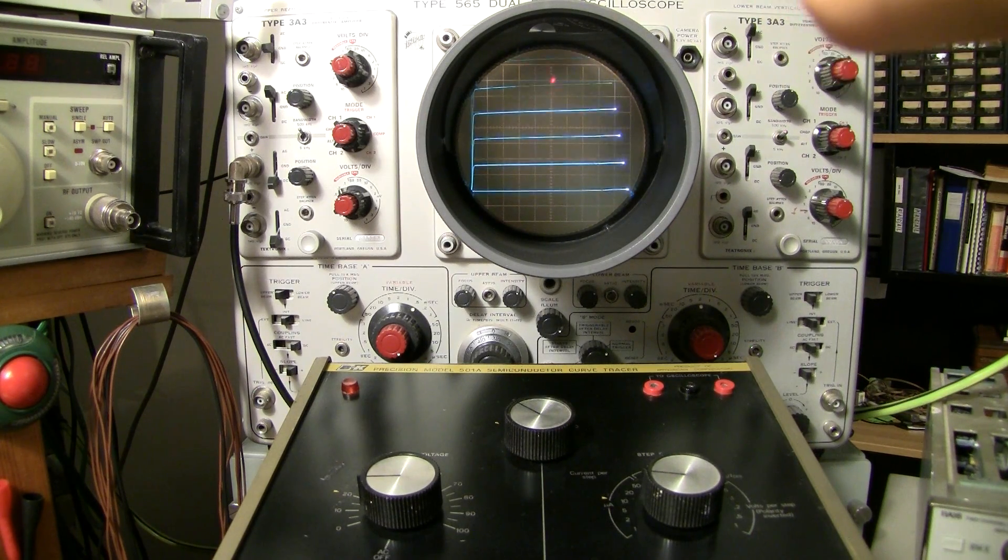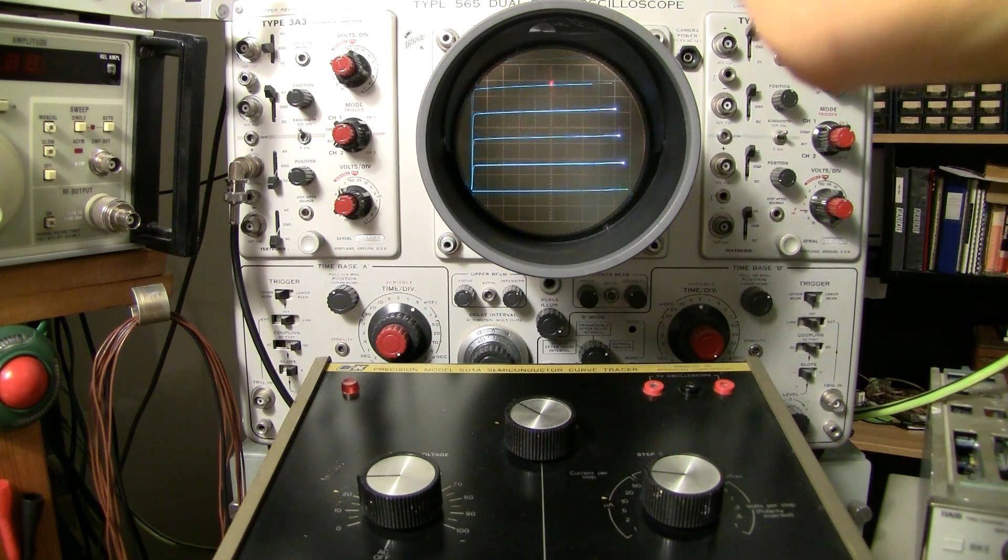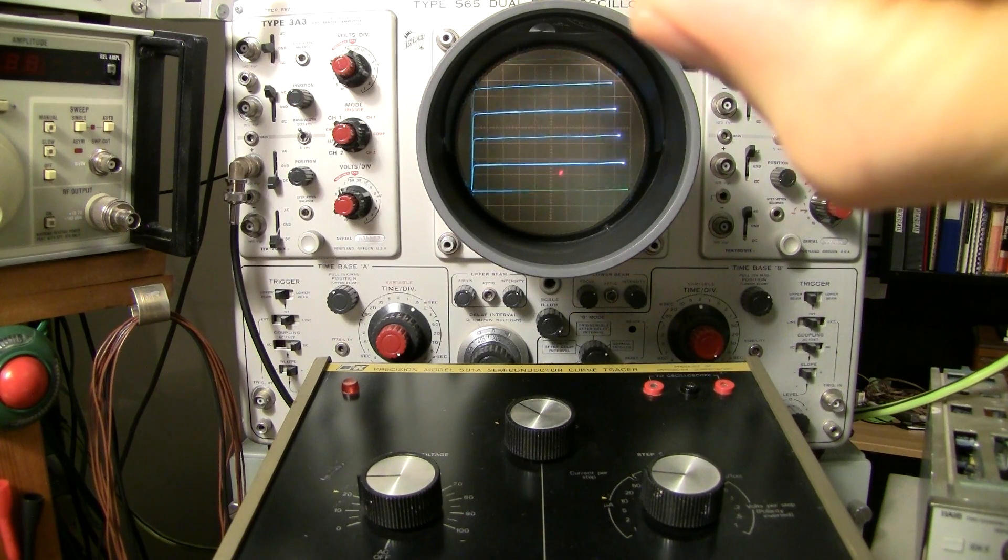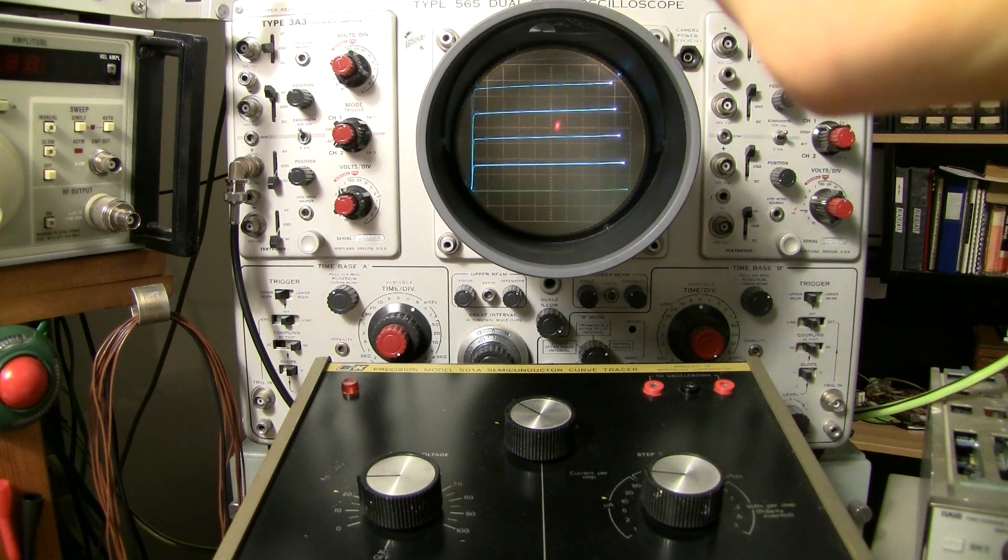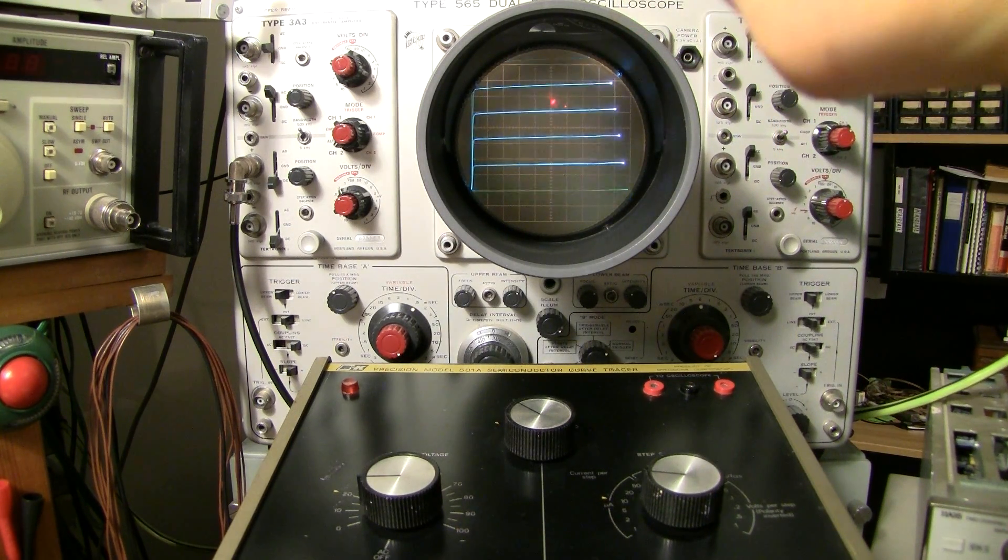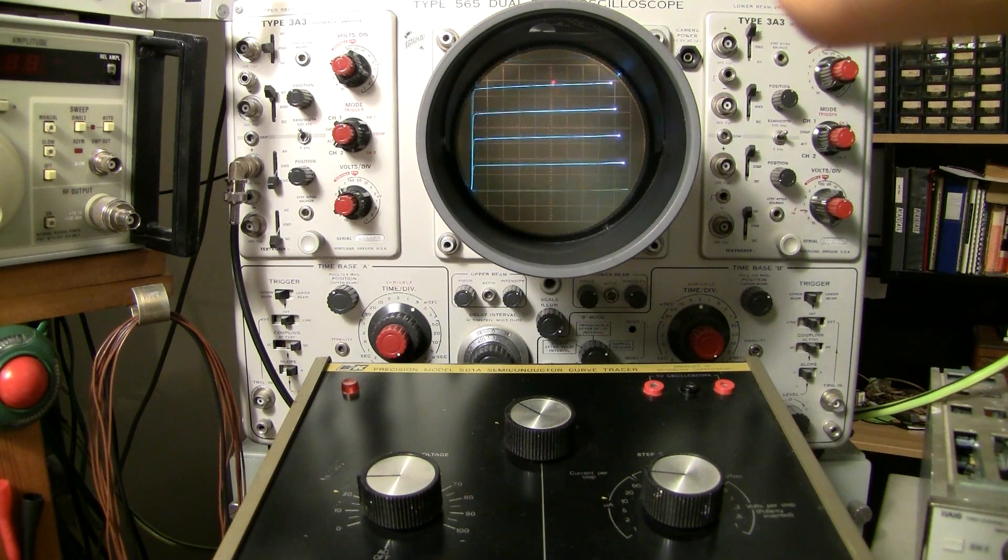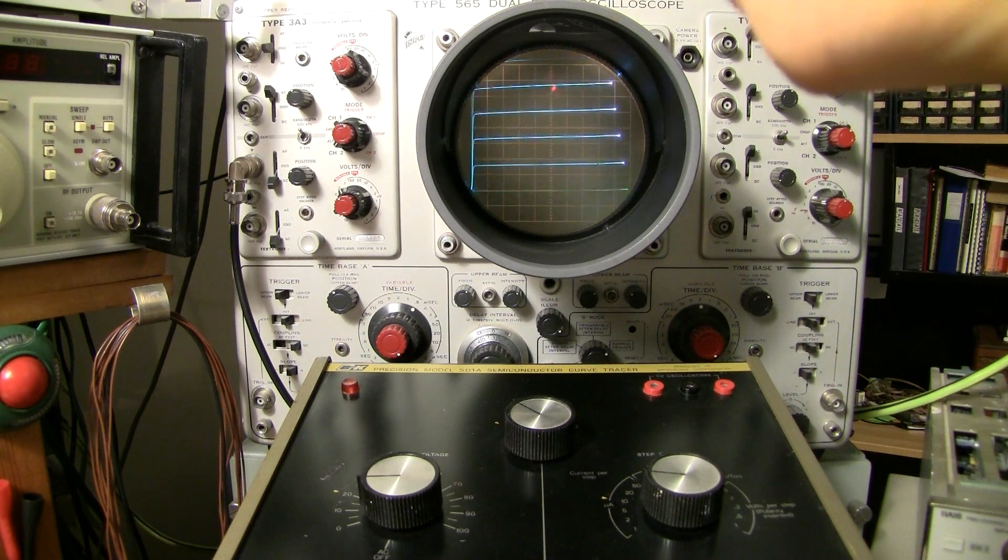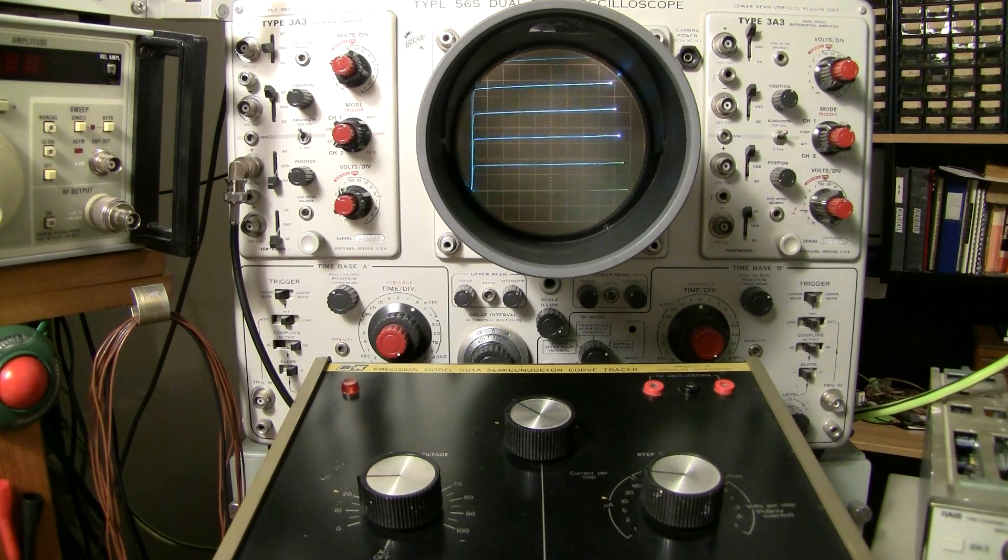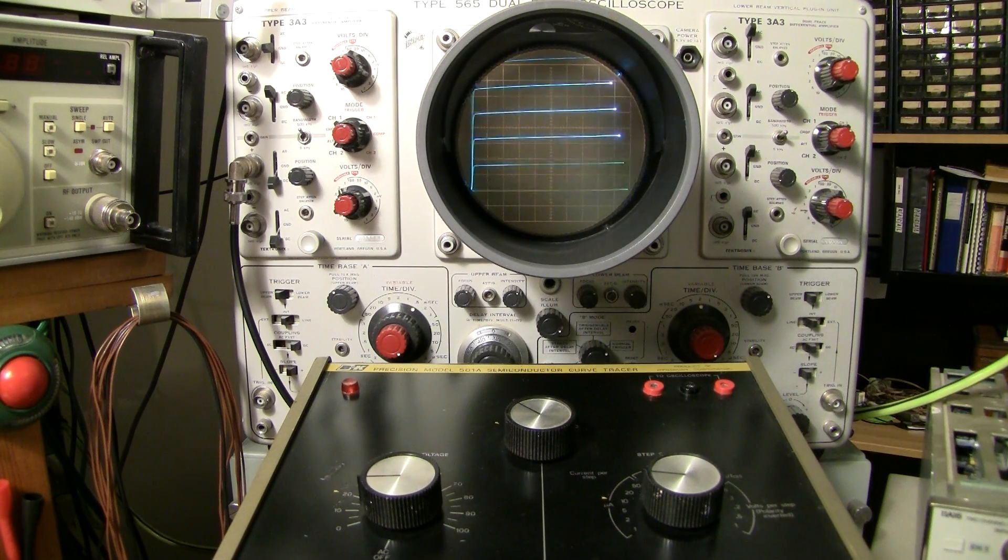Now we've got to count up to this line because this is the second one we're going to use. So we go 1, 2, 3, 4, 5, 6, about 6.8, 6.8 milliamps to this point right here. So that's the second figure that we're going to write down on our piece of paper.